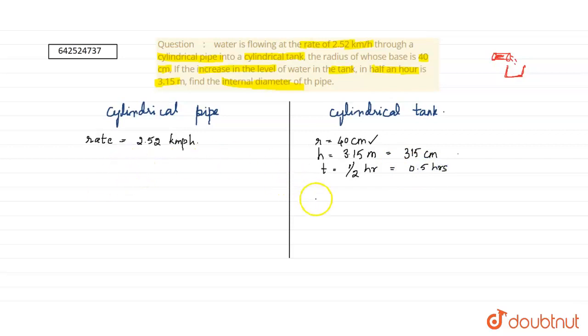Now, let us find the volume of water in the cylindrical tank. Volume equals πr²h, which is 3.14 × 40² × 315 centimeter cube. The units are important. Multiplying all this, we get 158,400 centimeter cube.